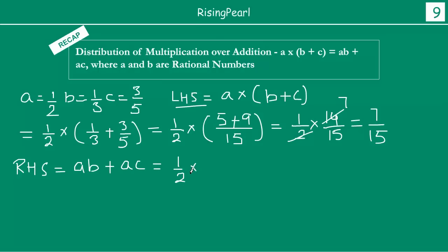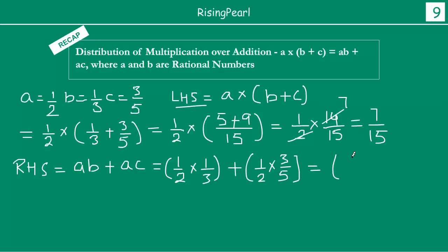AB means 1/2 multiplied by B which is 1/3, plus AC which is 1/2 multiplied by 3/5. Let us solve this. 1×1 = 1 and 2×3 = 6, so AB = 1/6. Then 1×3 = 3 and 2×5 = 10, so AC = 3/10.